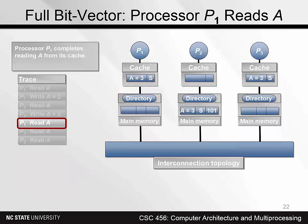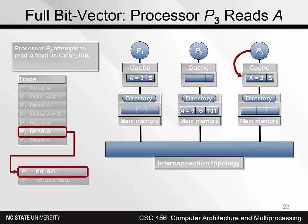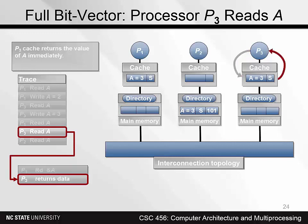The read operation completes. Now P3 reads A from its cache. This is a cache hit, so the cache simply returns the data. No network transaction is needed. The read operation completes.